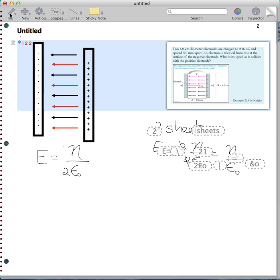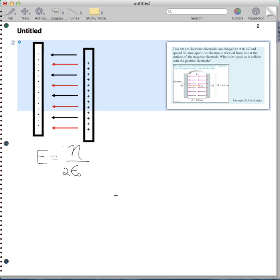And so what about eta? So eta, let's try that again. So two sheets, my E field is equal to two times eta over two epsilon zero. Cancel out my twos and I'm left with eta over epsilon zero.